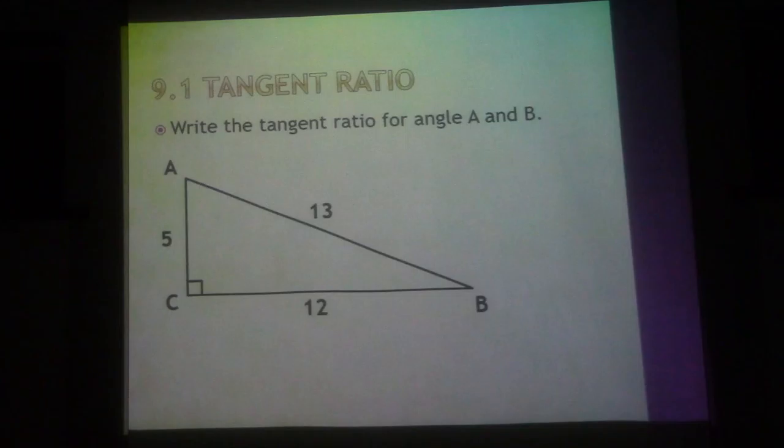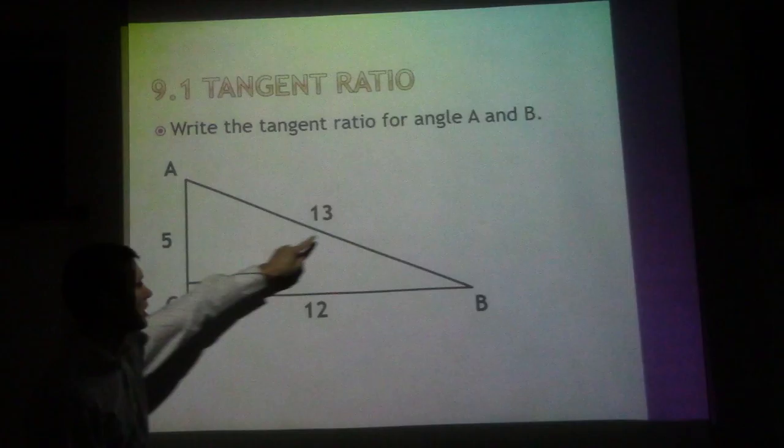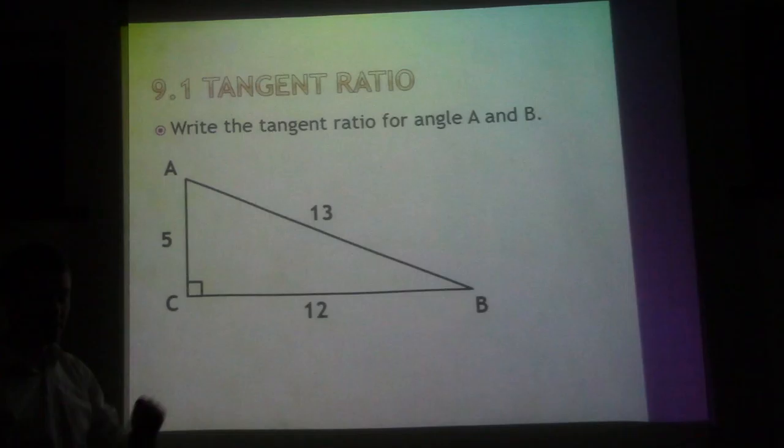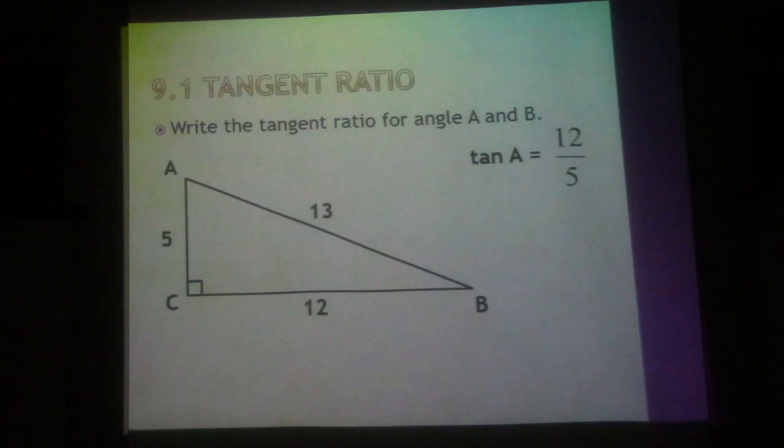This allows us to find the measuring angle as well as the side. If I write the tangent ratio for angle A, from angle A the side opposite is 12, the side adjacent is 5, so tangent of angle A is 12 over 5.